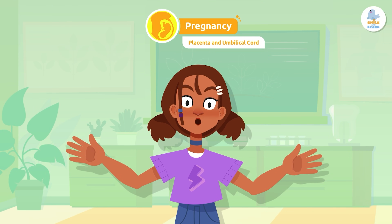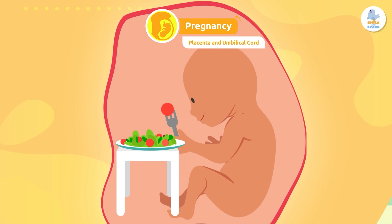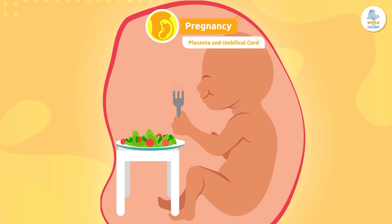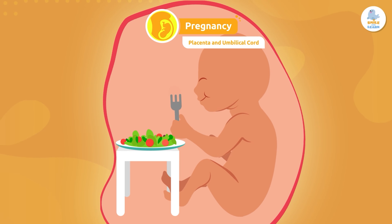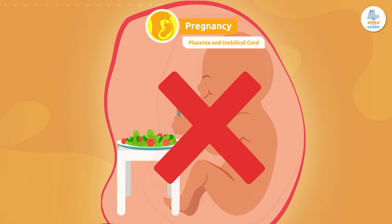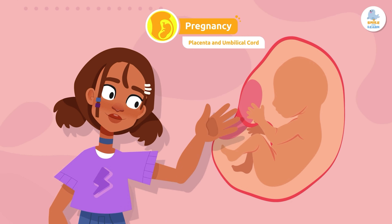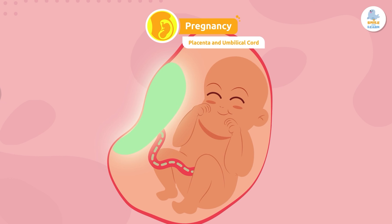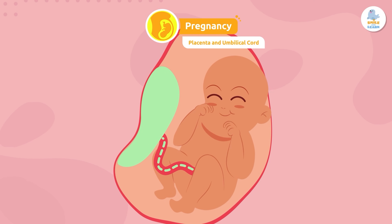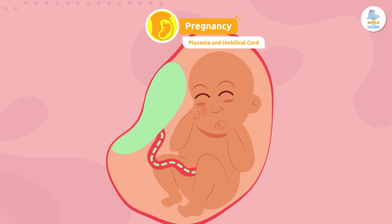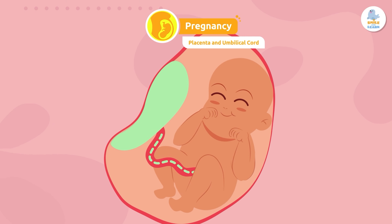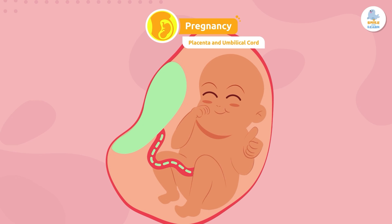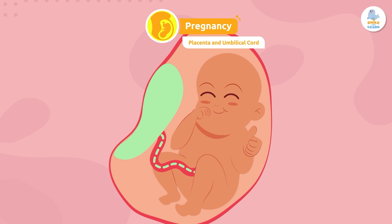Do you know how the fetus gets food during pregnancy? Not through the mouth — not yet! It gets nutrition through the placenta. The placenta is responsible for transporting nutrients and oxygen to the baby through the mother's blood. It is a vital organ, as it keeps the fetus alive until birth.